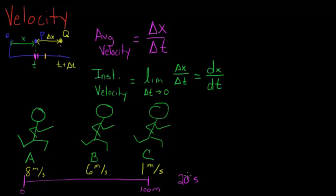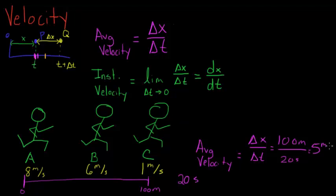From this information, we're able to calculate his average velocity. So his average velocity is equal to the change in distance over the change in time, which is 100 meters over 20 seconds, or 5 meters per second.